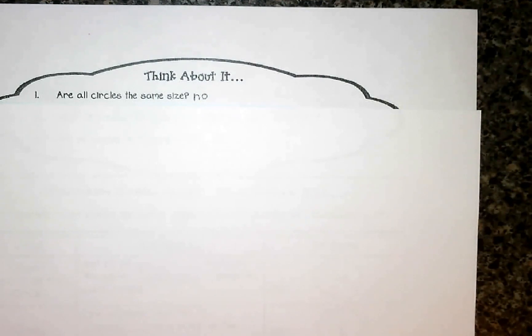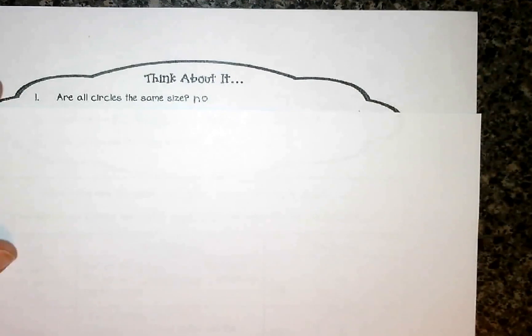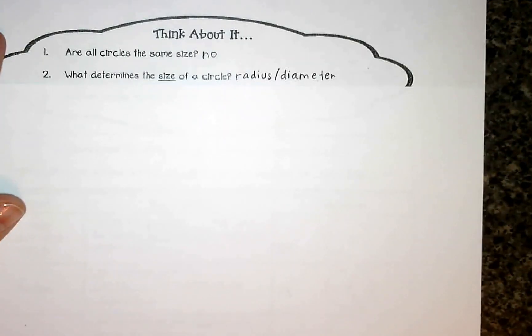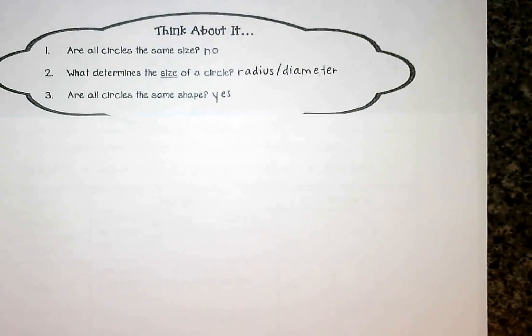Number two, what determines the size of a circle? So whether that circle is small or large, what determines that is what we call the radius or in conjunction with that is the diameter. We'll learn the specifics about those in just a second. And the third question to consider is, are all circles the same shape? Well, yes, they are the same shape.